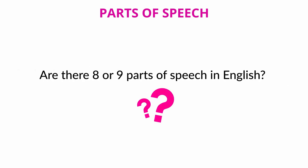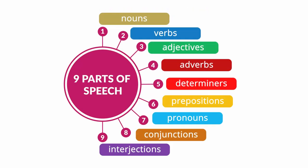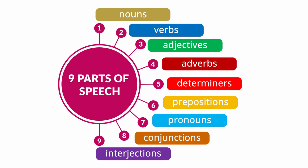Are there eight or nine parts of speech in English? Some grammar sources classify determiners under their own category, but in traditional English grammar we know nine parts of speech where a determiner is a part of speech. They are nouns, verbs, adjectives, adverbs, determiners, prepositions, pronouns, conjunctions, and interjections or short exclamations.